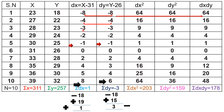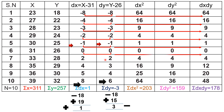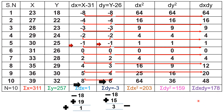Now calculate dx·dy by multiplying corresponding dx and dy values: 2 times 2 = 4, 1 times 1 = 1, 0 times 0 = 0, 2 times 2 = 4, 4 times 3 = 12, 5 times 4 = 20, 8 times 6 = 48. Adding all the dx·dy values gives sigma dx·dy equals 170.